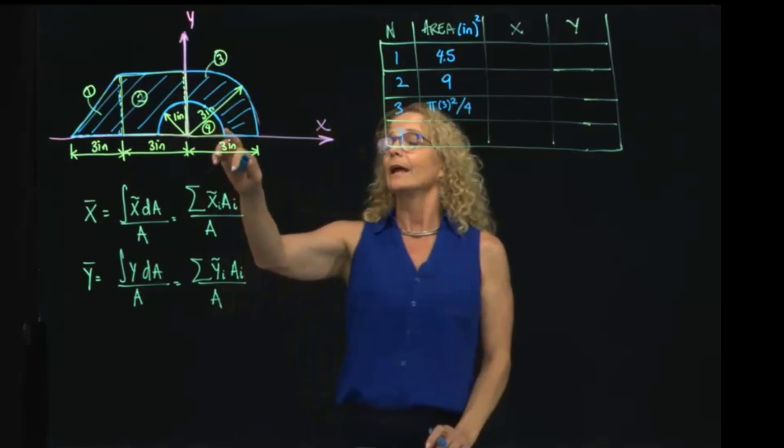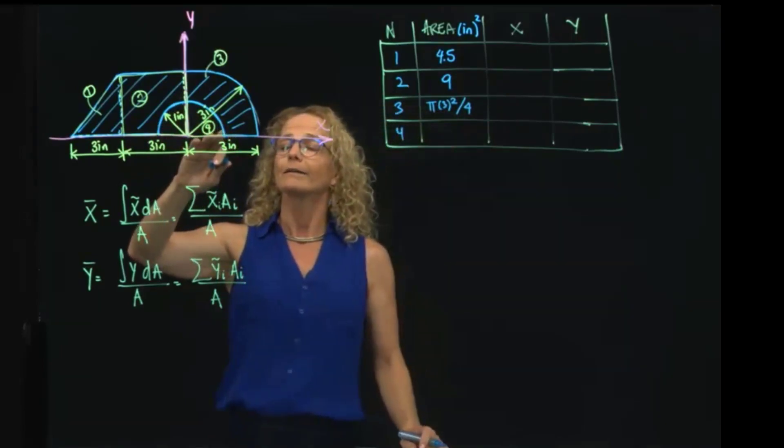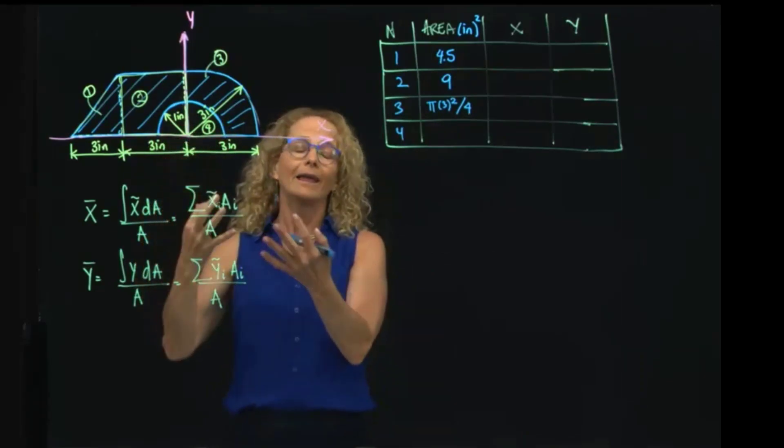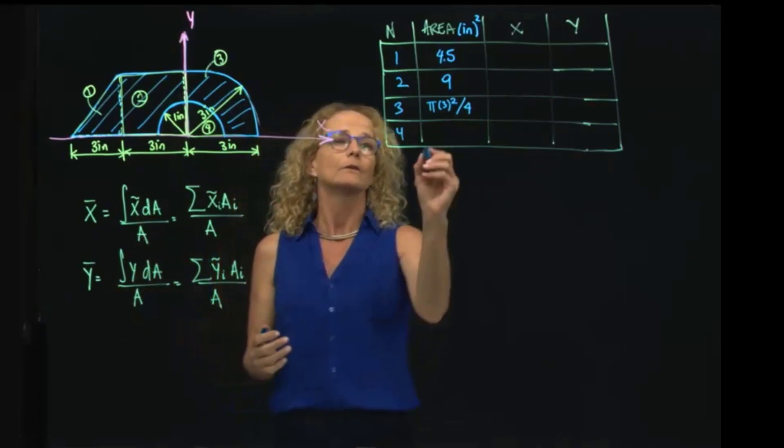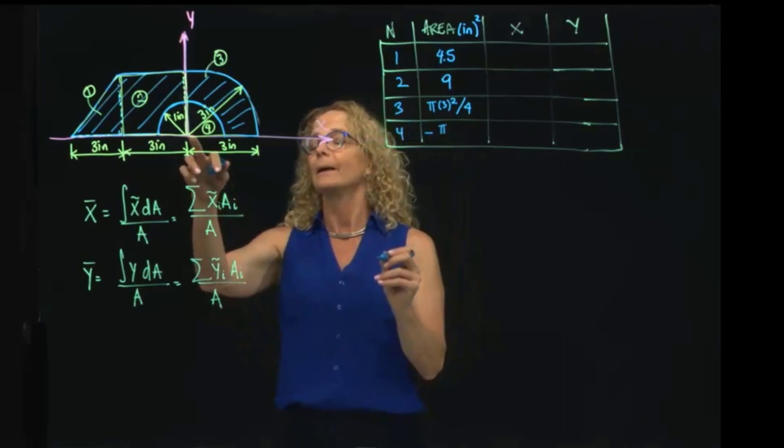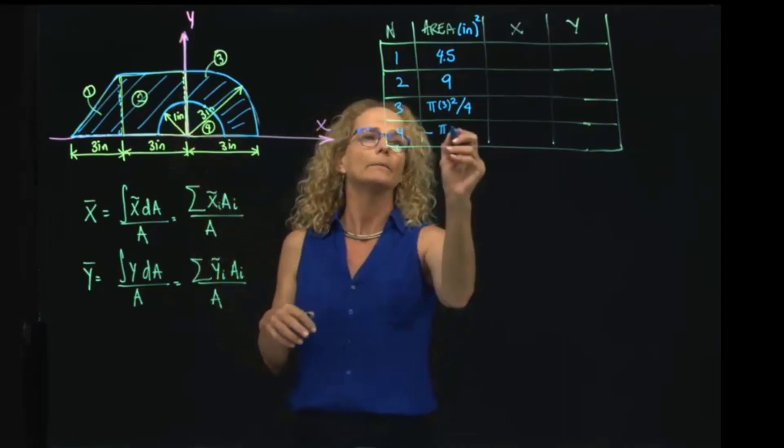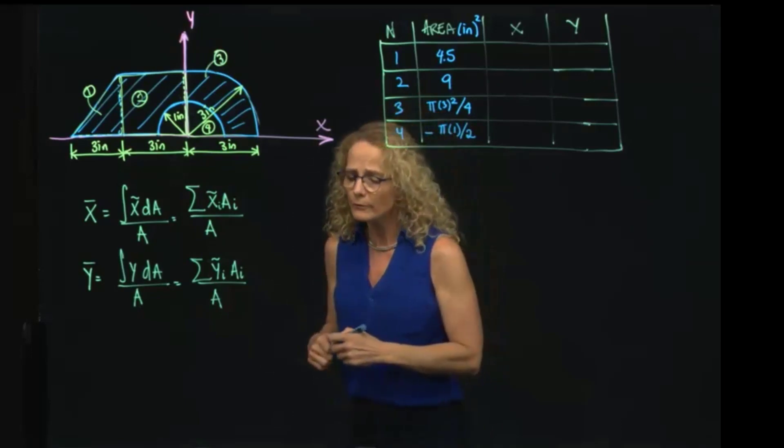And the fourth one is also a circular plate, but only half of it, and it's an area that I am subtracting from my figure. Therefore it's a negative area: pi, the radius is 1, and it's divided by 2. So those are the fourth areas.